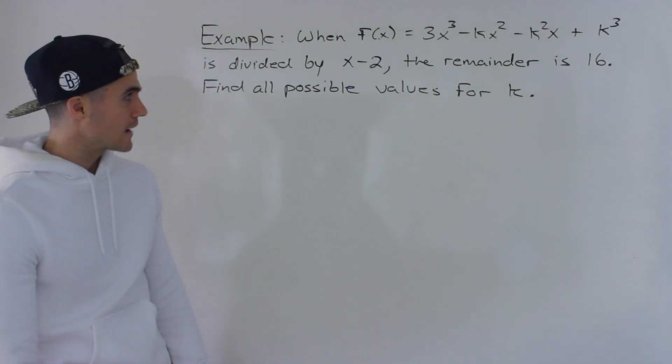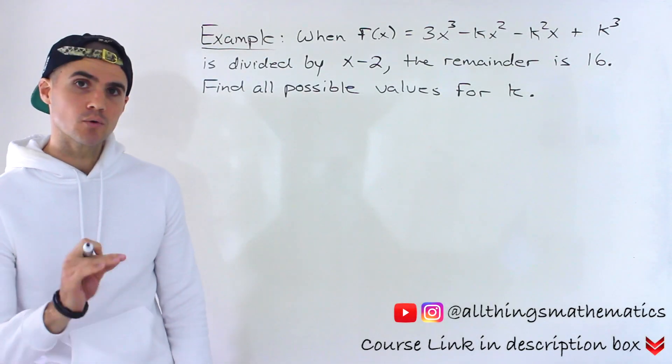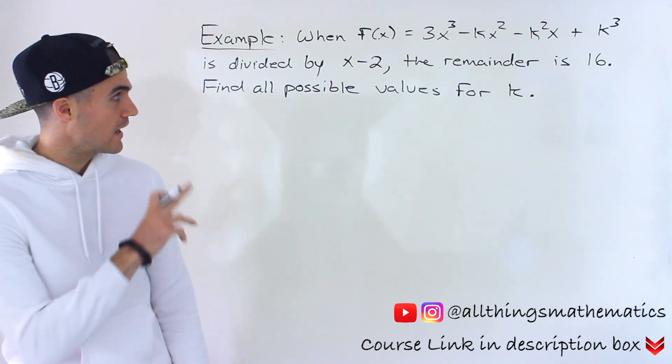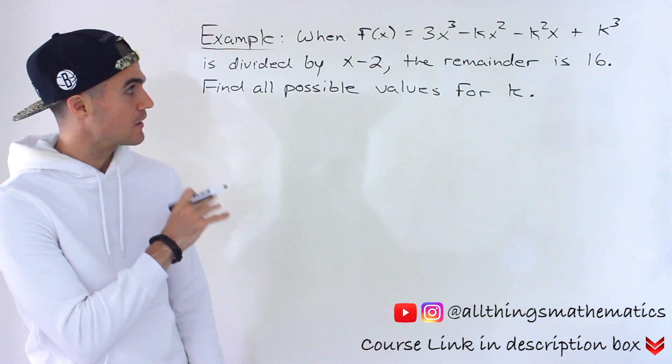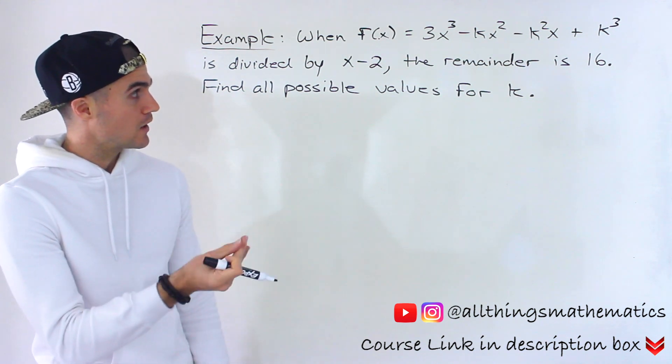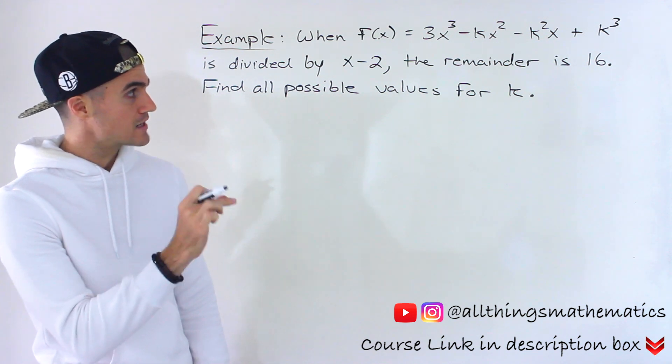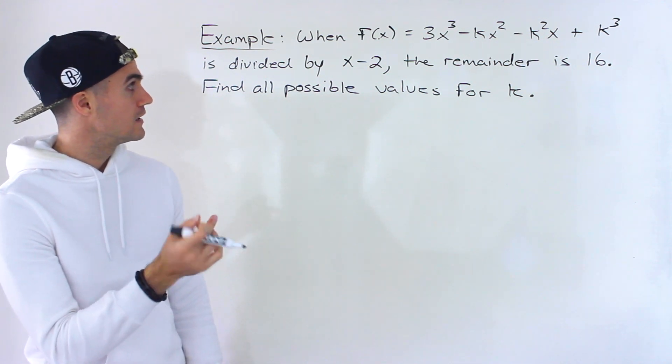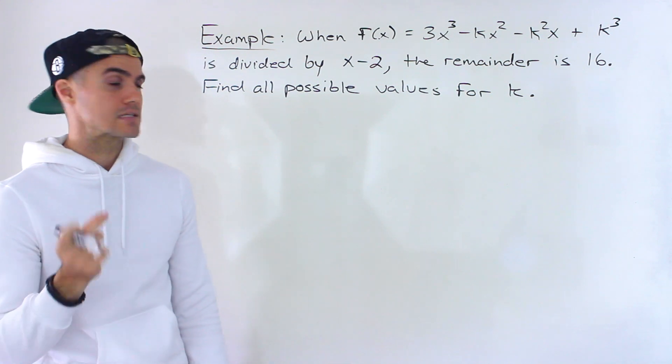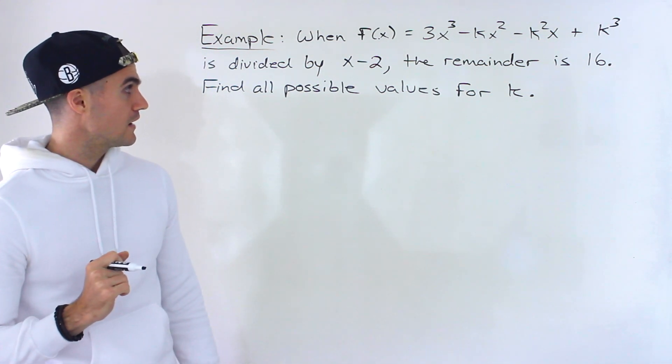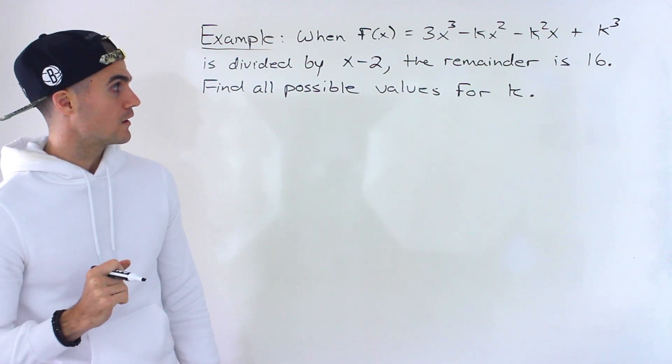What's up everyone? Patrick here. Welcome back. Moving on to another question dealing with the remainder theorem. When f(x) = 3x³ - kx² - k²x + k³ is divided by x - 2, the remainder is 16. Find all possible values for k.